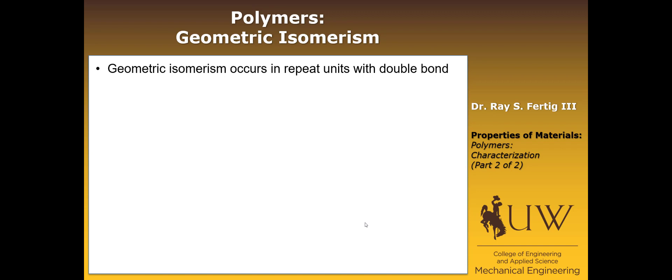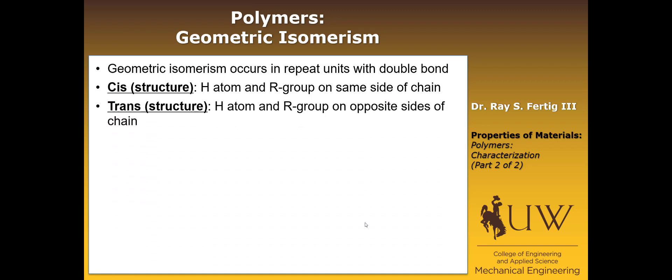So I'll define the terms and then show you an example. There's a cis structure. And all that is, it tells you how the H atom in the structure and the R group are oriented with respect to the chain. So if they're on the same side of the chain, it's a cis structure. If they're on opposite sides of the chain, we call that a trans structure.